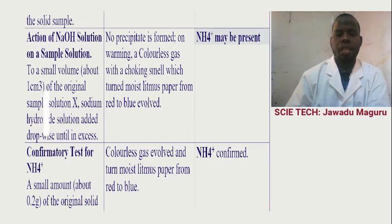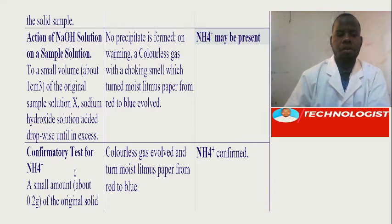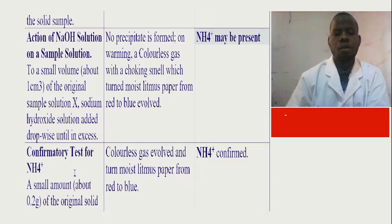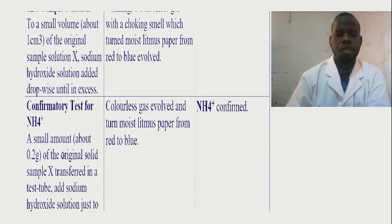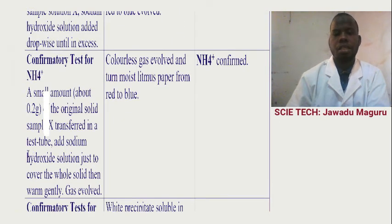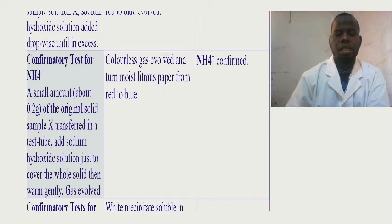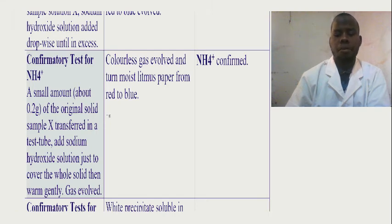After testing in solution, you have to see the confirmatory test. Confirmatory test for ammonium ion: you use sodium hydroxide. The colorless gas evolved and turned moist litmus paper from red to blue, and therefore ammonia is confirmed according to that observation.